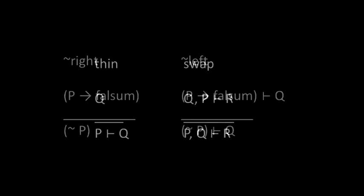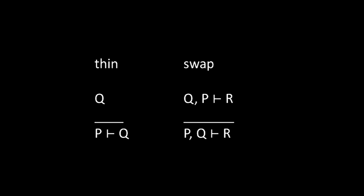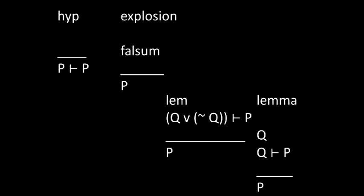Second, two structural rules. The first allows us to weaken a list of assumptions, and the second to change their order. Finally, a group of rules not dealing with connectives. Adding hype and lemma creates the minimal propositional calculus. Hype is, of course, proof by hypothesis, and lemma is a close cousin of the cut rule. It allows us to pose an arbitrary prop as a lemma, which, if proved, becomes an extra assumption. Adding the principle of explosion creates the intuitionistic propositional calculus, and adding the law of the excluded middle creates full classical propositional calculus.